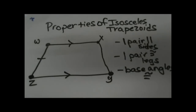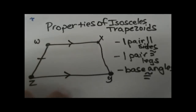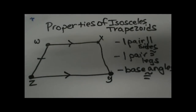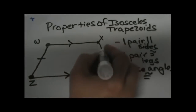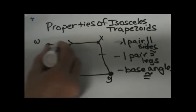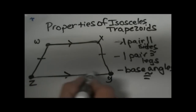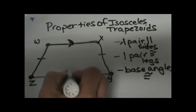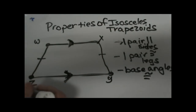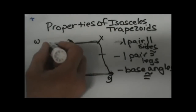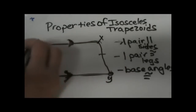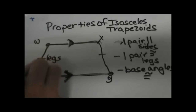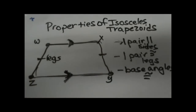Welcome to Moo Moo Math. Today we are going to look at the properties of isosceles trapezoids. Let's first define what an isosceles trapezoid is. It is a quadrilateral, meaning it has four sides. A trapezoid also has one pair of parallel sides — that is the first property we are looking at. We have WX parallel to ZY, and those are the two sides that are parallel. Since it is an isosceles trapezoid, we have one pair of congruent legs — the two sides that are not parallel to each other are called legs, and they are the same length.